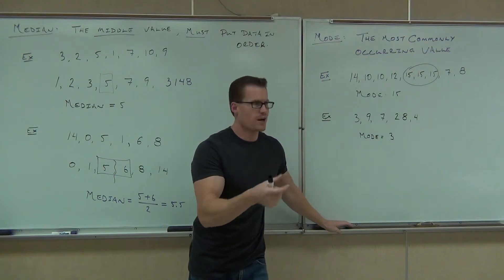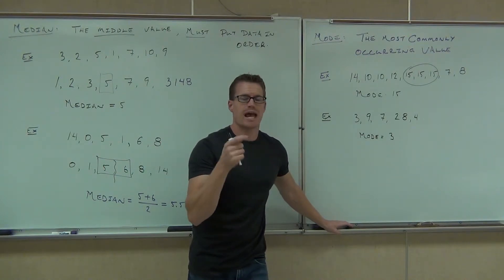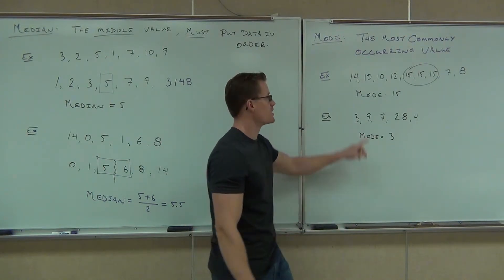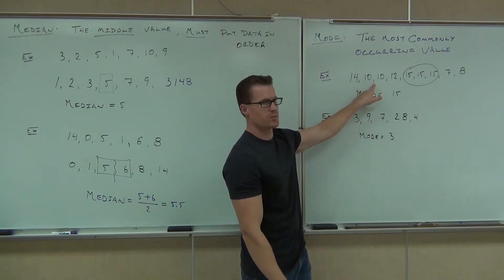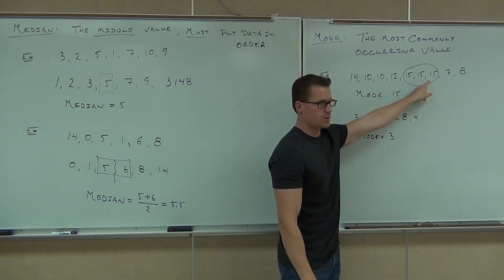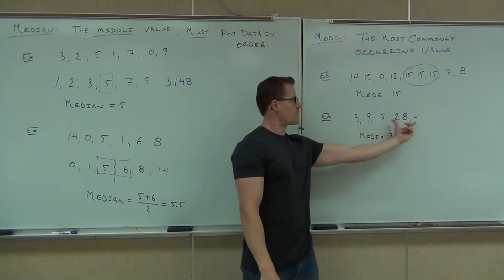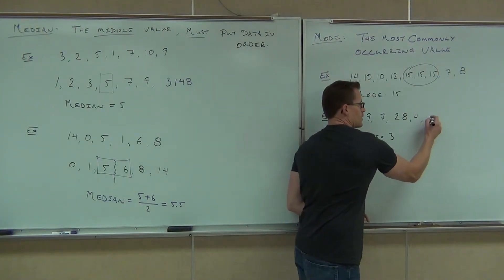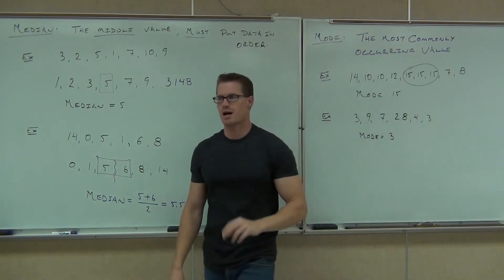Mode signifies that you have a number that repeats and that it repeats the most often. Here the number repeated, but it's not a mode because it didn't repeat the most often. Here the number repeated the most often, that's our mode. Here nothing repeated. If I tack on that three, the three repeats only one time. That is our mode.